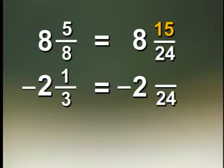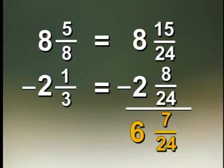Well, 15 24ths is equivalent to 5 eighths. 8 24ths is equivalent to 1 third. I subtract 15 minus 8 and get 7 24ths. 8 minus 2 is 6.